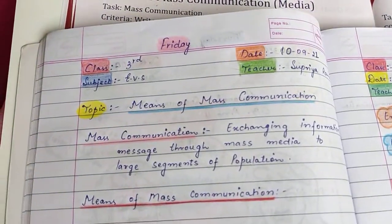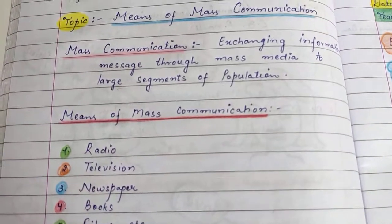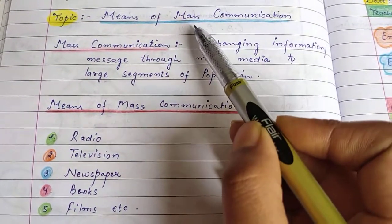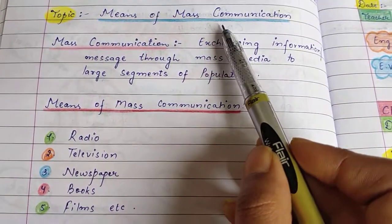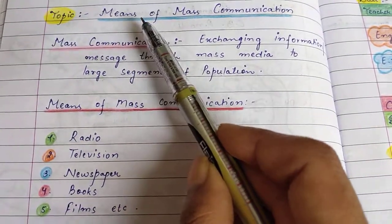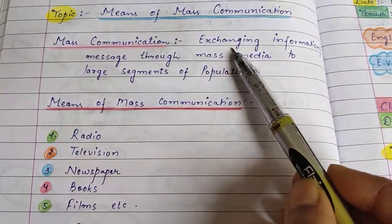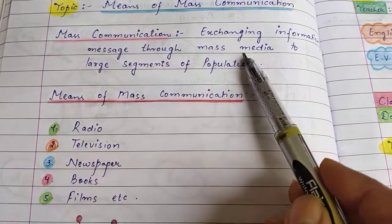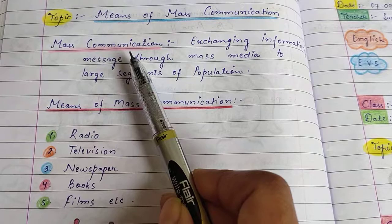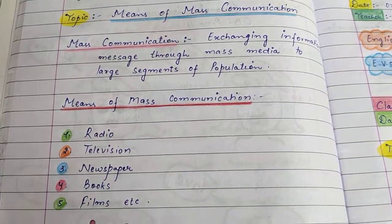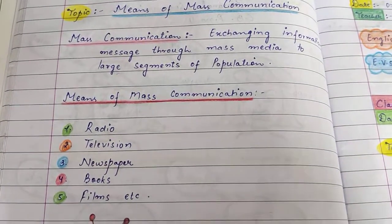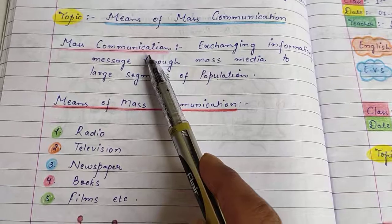Hame pehle padha tha ki mass communication means jab hum communicate kare, apne ideas ko express kare, aur jis me receiver bohut saare ho, large number of population ho, usse hum mass communication kehte hain. Mass communication is exchange of information ya koi message through mass media to a large segment of population. Mass means large segment of population. Toh jab hum apne ideas ko express kare aur us idea ko dekhne waala, sunne waala ya samajhne waala large segment of population ho, means bohut zyada persons ho, usse hum mass communication kehte hain.